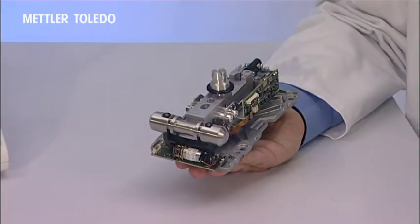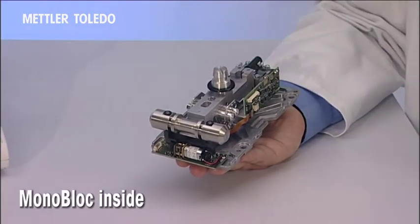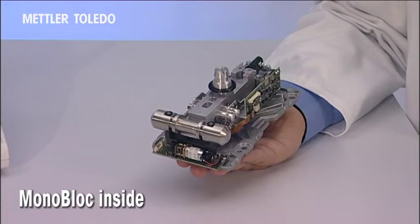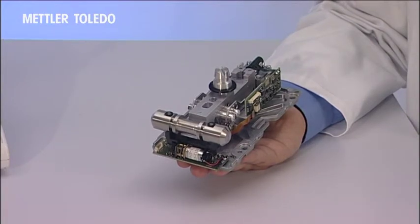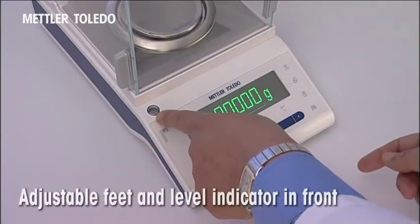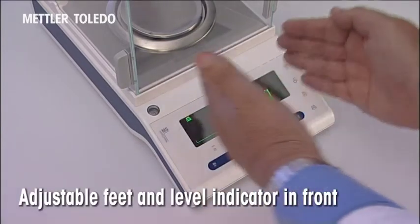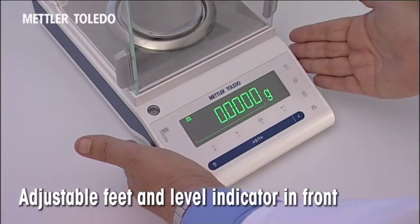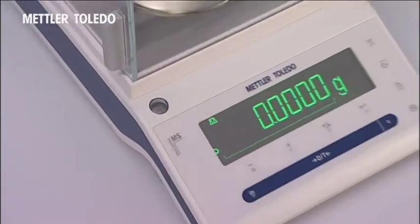The proven monoblock weighing cell inside the balance guarantees a long operating life and extreme ruggedness. The adjustable feet and the level indicator are placed in front for easy access and clearest visibility.